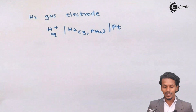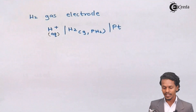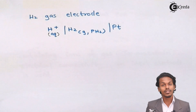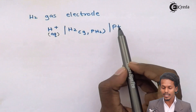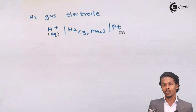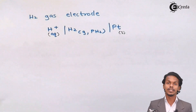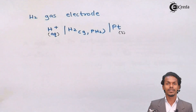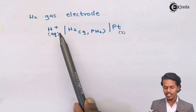In the hydrogen gas electrode, H⁺ is present in aqueous form — this can be from HCl or H₂SO₄. H₂ gas is present at a pressure of p(H₂), which can be 1 atmosphere or 2 atmospheres depending on the conditions. This is separated by solid platinum, which serves as the inert electrode, allowing H₂ to deposit on it and enabling electrical conduction.